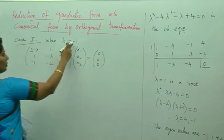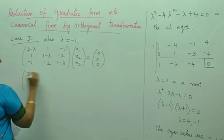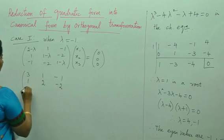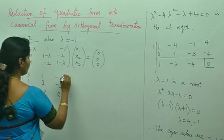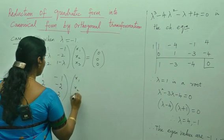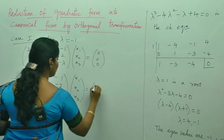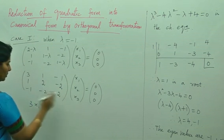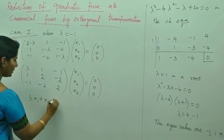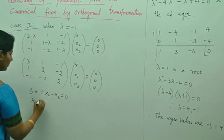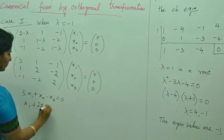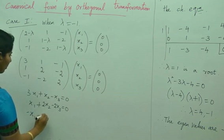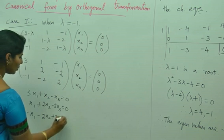Substituting lambda equals minus 1, we get the matrix: row 1: 3, 1, minus 1; row 2: 1, 2, minus 2; row 3: minus 1, minus 2, 2. This gives the system of equations: 3x1 plus x2 minus x3 equals 0; x1 plus 2x2 minus 2x3 equals 0; minus x1 minus 2x2 plus 2x3 equals 0.